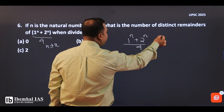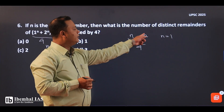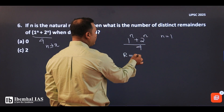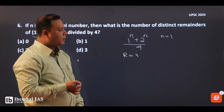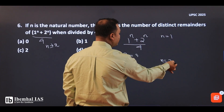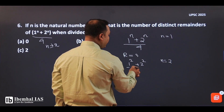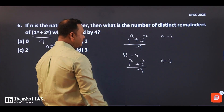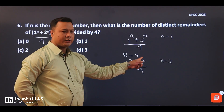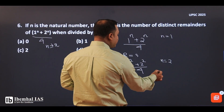For n=1: 1 to the power of 1 plus 2 to the power of 1 gives remainder. For n=2: 1 squared plus 2 squared divided by 4 — 2 squared is 4, so the remainder is 0. So the remainder here is distinct.